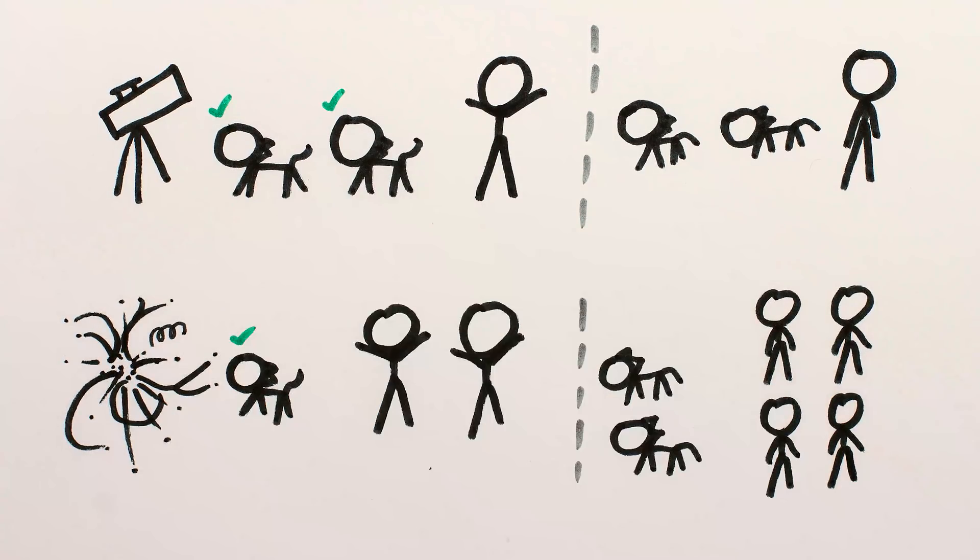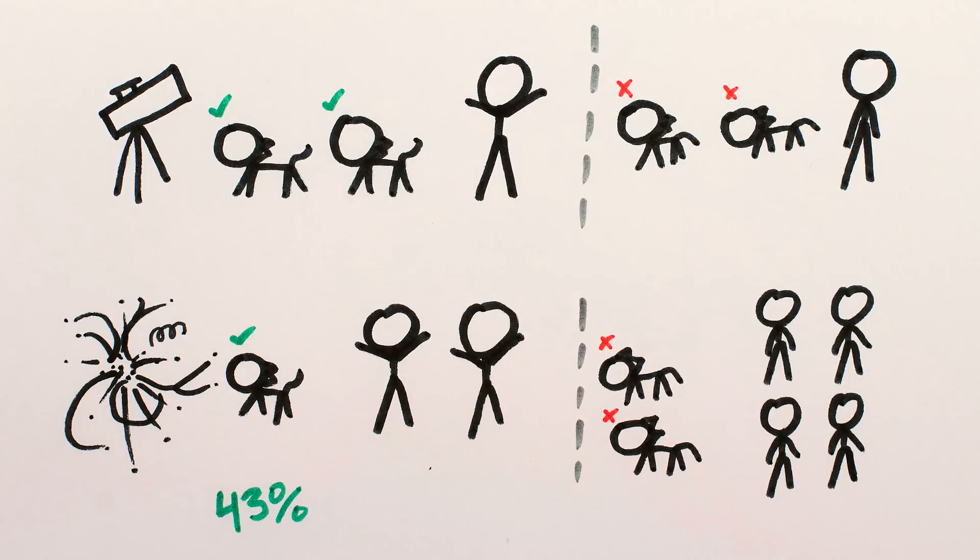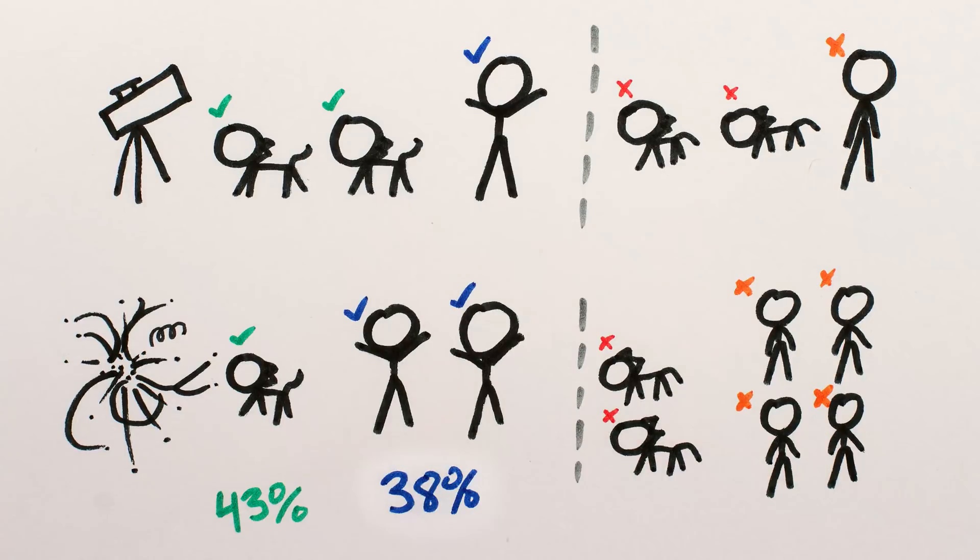So overall at the university, three cats are accepted and four rejected for a 43% acceptance rate, while three humans are accepted and five rejected for a 38% acceptance rate. Is the university discriminating against humans in its application process?